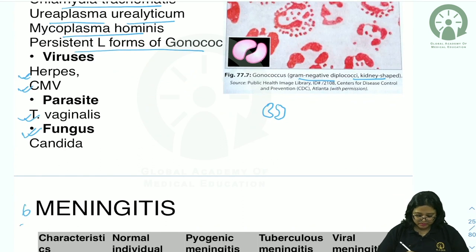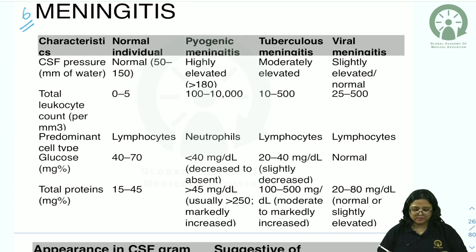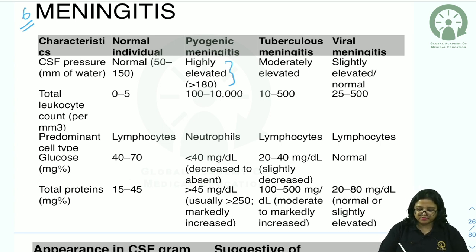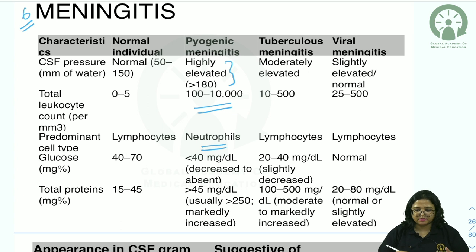Before dealing with acute bacterial meningitis, let us compare CSF characteristics across pyogenic, tuberculous, and viral meningitis. In pyogenic meningitis: CSF pressure is highly elevated, leukocyte count is very high (10² to 10⁵ per mm³), predominant cell type is neutrophil, glucose is low (bacteria utilize it as energy), and total protein is high. In tuberculous meningitis: leukocyte count is low, predominant cell is lymphocyte, glucose slightly decreased, protein moderately to markedly increased.